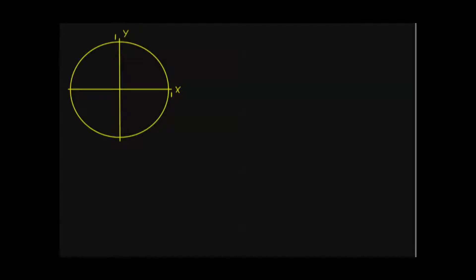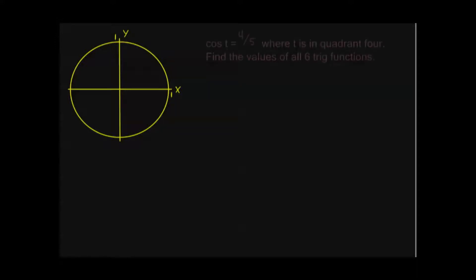Welcome to AntonMath. This is Unit 5, Section 2, the exercise video. We've already gone through all the material, but I wanted to give some examples of what typical homework problems, test problems, or exercises might look like. I don't know if we'll need this unit circle, but I've left it up here just in case. I've typed up a couple of problems, so we'll go through them one at a time.